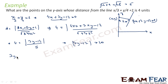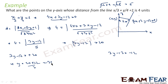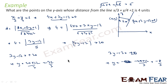Removing the absolute value gives two scenarios. First case: 3Y minus 12 equals plus 20, so Y equals 32/3. Second case: 3Y minus 12 equals minus 20, so Y equals minus 8/3. We have two possible points: (0, 32/3) and (0, -8/3). From either of these points, the distance to the line is 4 units.